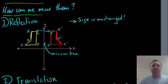So how can we move them? The first way that we can move them is through reflection. So this is exactly what it sounds like. You reflect the shape. So if this is my shape one, and here's my shape two, I've reflected it across the mirror line, which for my intents and purposes here is the y-axis. So the important thing to remember is that the size is unchanged. Even though it's been flipped around, flipped over, it's still exactly the same size.